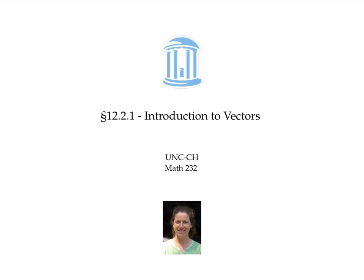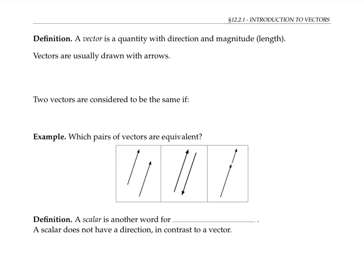This video introduces vectors and basic operations on them. A vector is a quantity with direction and magnitude — magnitude is also called length. Vectors are usually drawn with arrows.